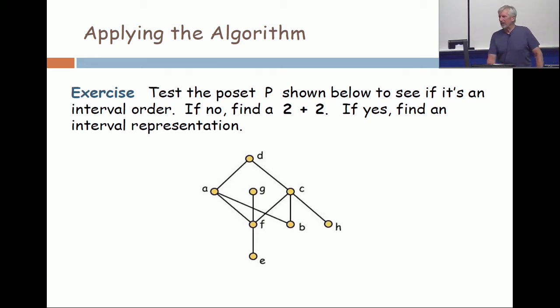Calculate the upsets and downsets for this. And see that it's an interval. It is an interval order, by the way. And find the representation and do the Dilworth problem for this poset.